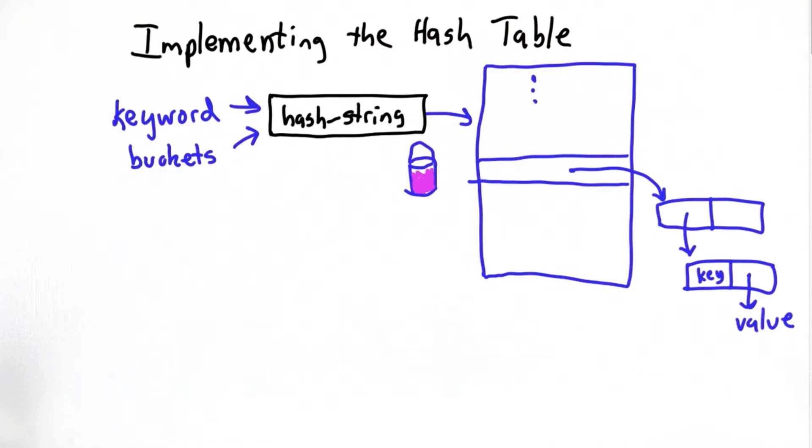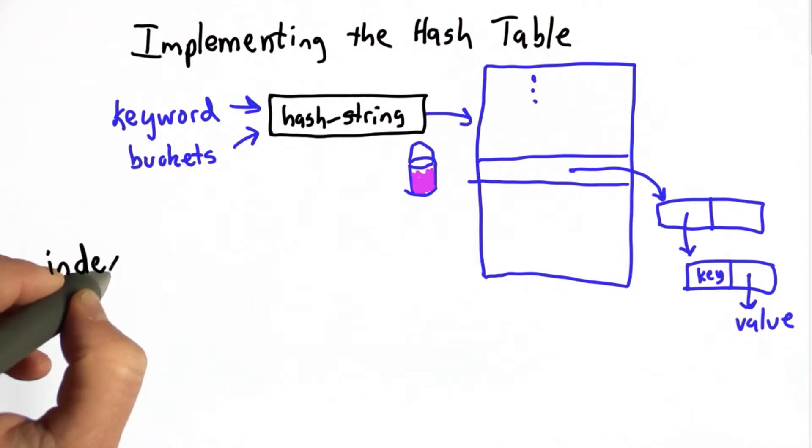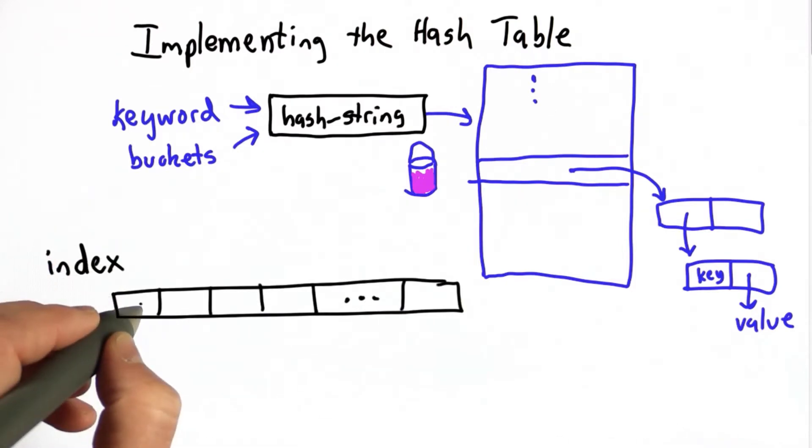The first question is, how is this going to change our data structure? This was what we had before. If you remember, our index was a list of keywords. We had a list of entries, and each entry was a pair.